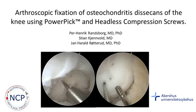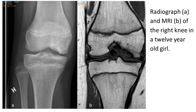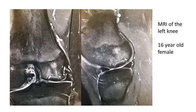In this video, we present our preferred method of fixing an unstable osteochondritis dissecans of the knee. Most commonly, the lesions are found in the lateral aspects of the medial femoral condyle, as seen on these images. In unstable lesions, fluid can be seen on the MRI scans as a white line behind the fragment.